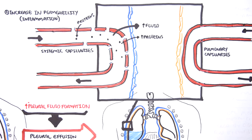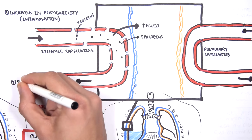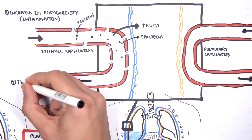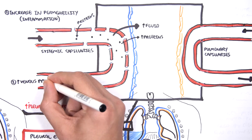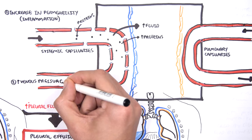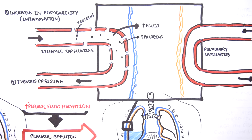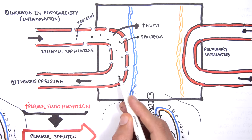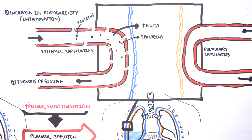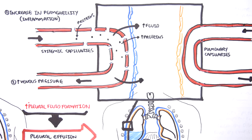If there is an increase in venous pressure, such as left-sided or right-sided heart failure, this can lead to pleural effusion because blood cannot travel back to the heart efficiently.